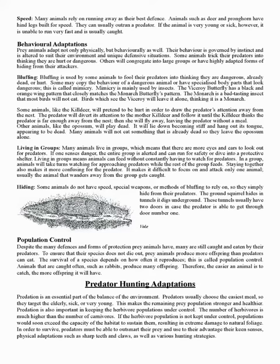Some animals do not have speed, special weapons, or methods of bluffing to rely on, so they simply hide from their predators. The ground squirrel hides in tunnels it digs underground, usually with two entrances in case the predator gets through one. Despite the many defenses prey animals have, many are still caught and eaten. To ensure their species does not die out, prey animals produce more offspring than predators can eat. The survival of a species depends on how often it reproduces — this is called population control. Animals that are caught often, such as rabbits, produce many offspring; the easier an animal is to catch, the more offspring it will have.